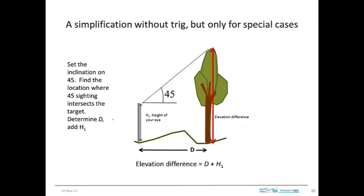Now another way to do this that doesn't require trigonometry, but it really only works as a special case, is you can set the inclinometer on 45 degrees. And then move around so that when you sight up in the air, you're sighting at 45 degrees and you sight up to the point where you want to measure.